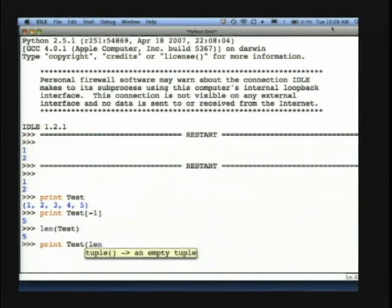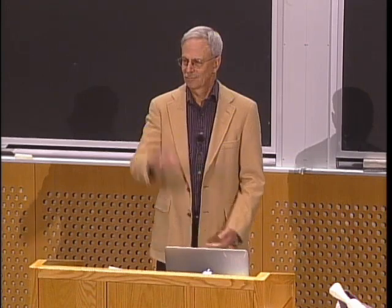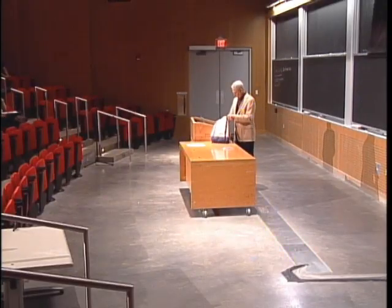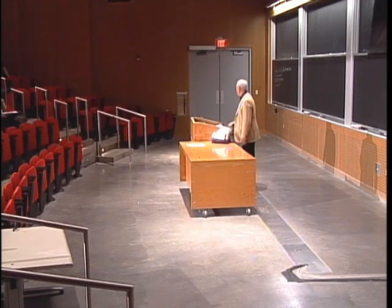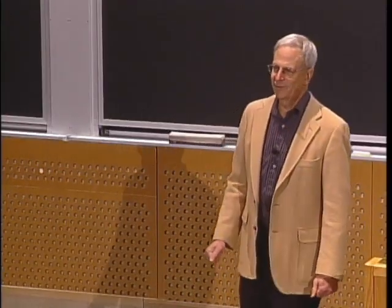Similarly, I could use negative indexing. That gives me the last element without my having to know what the last element is. If I try to index past the end, I get an out-of-range error — because I'm indexing from 0, that's why we have the more convenient way of writing minus 1. Otherwise I'd have to do len minus 1.